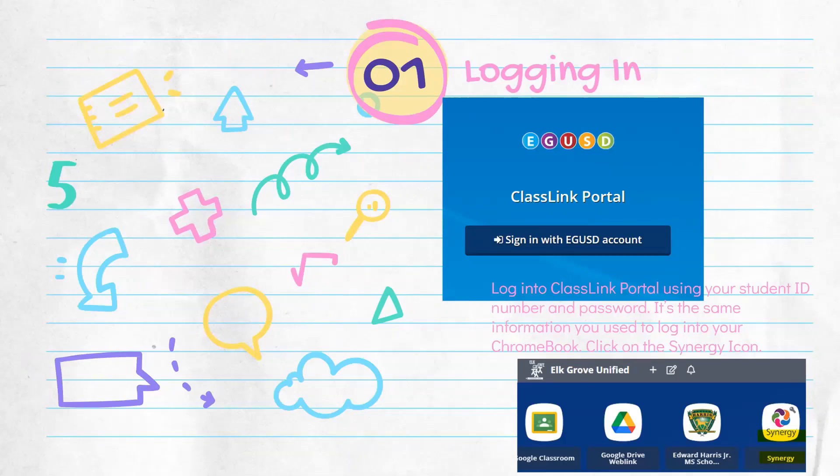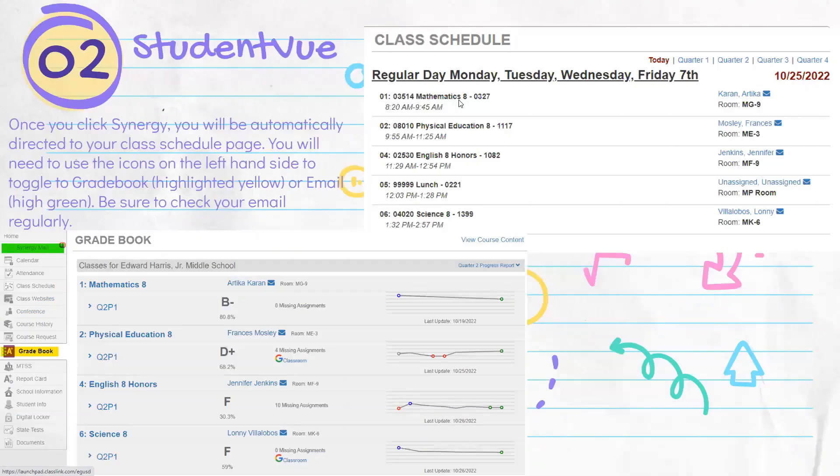So when you're logging in, many of you are already familiar with this. You log into your EGUSD account on ClassLink Portal. You'll see something on your screen like this. You click that. You log in using your student ID number and the password. It's the same information that you use when you log into your Chromebook. Here's what the Synergy icon looks like, and you will click that when the time comes.